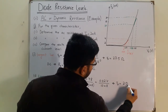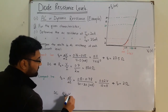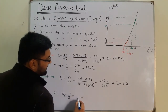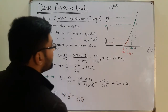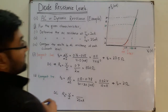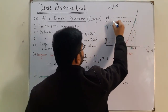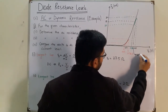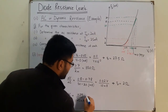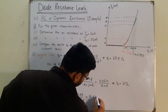The AC resistance at this point comes out to be 2 ohms. Now the DC resistance at the same point: Rd equals voltage at this point divided by current at this point. The current is 25 milliamperes and the voltage at 25 milliampere is 0.79 volts. So the resistance equals 0.79 divided by 25 milliamperes, which turns out to be 31.62 ohms.